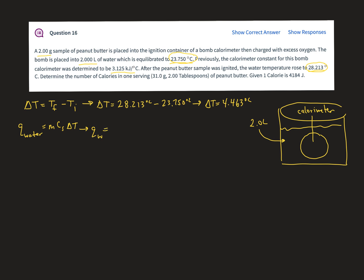The Q for the water is, well, two liters is 2,000 milliliters, which is 2,000 grams of water. So 2,000 grams of water, the specific heat of water is 4.184 joules per gram times degree Celsius. And my delta T is 4.463 degrees Celsius.